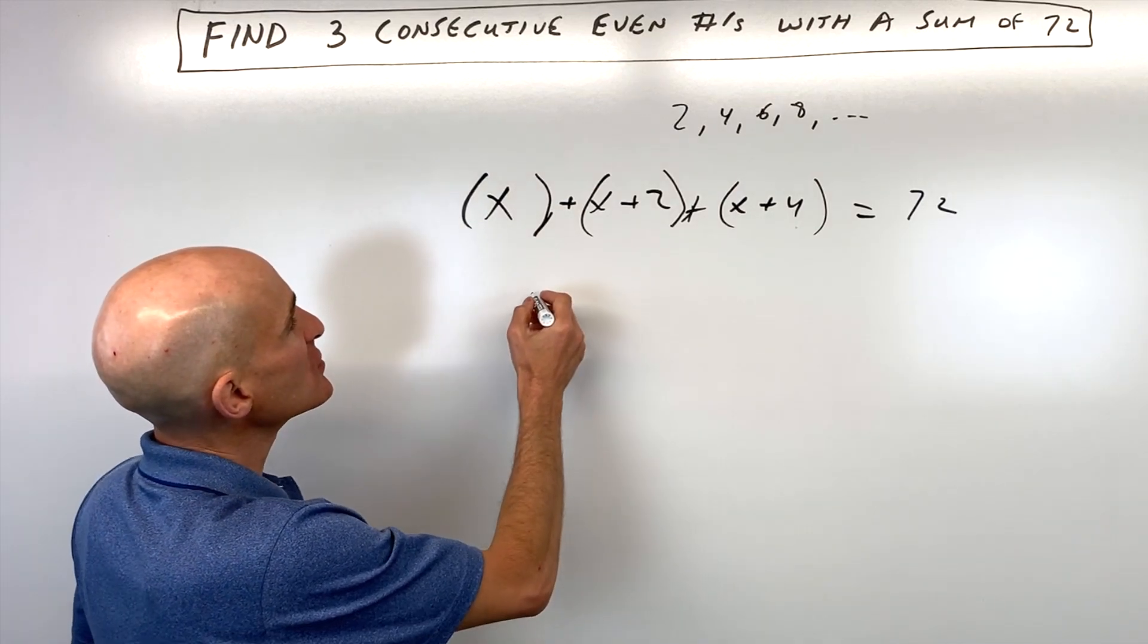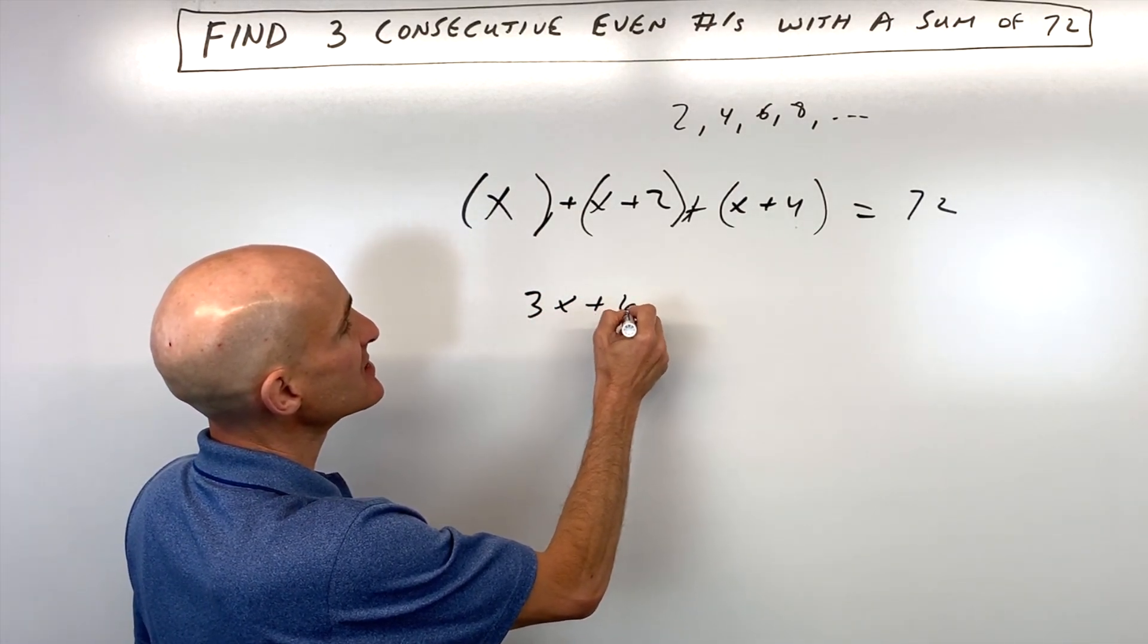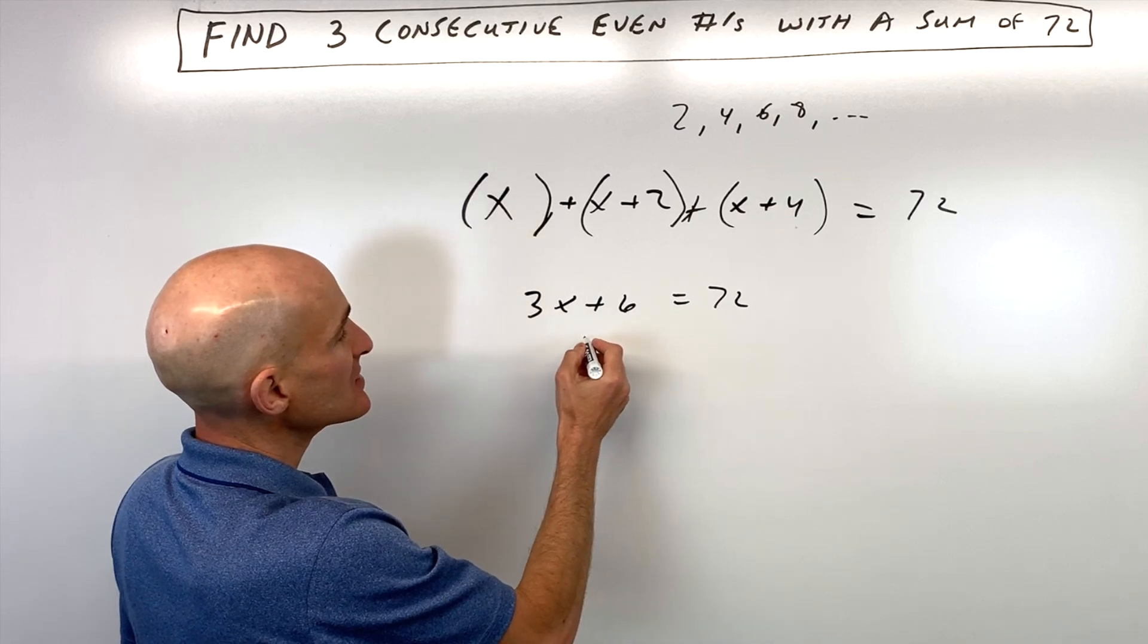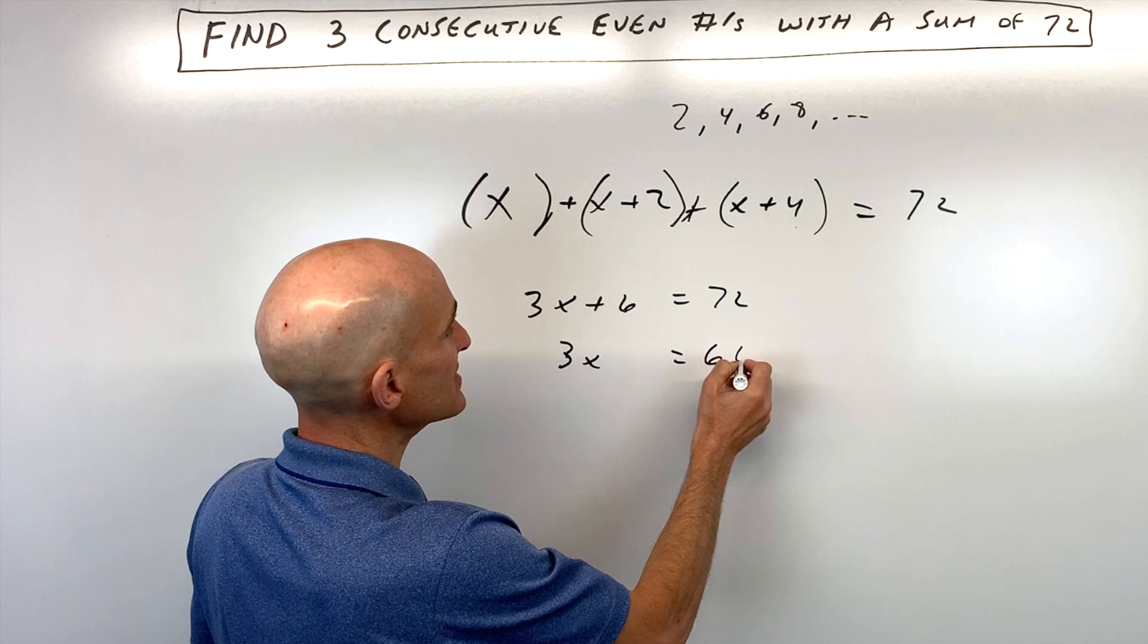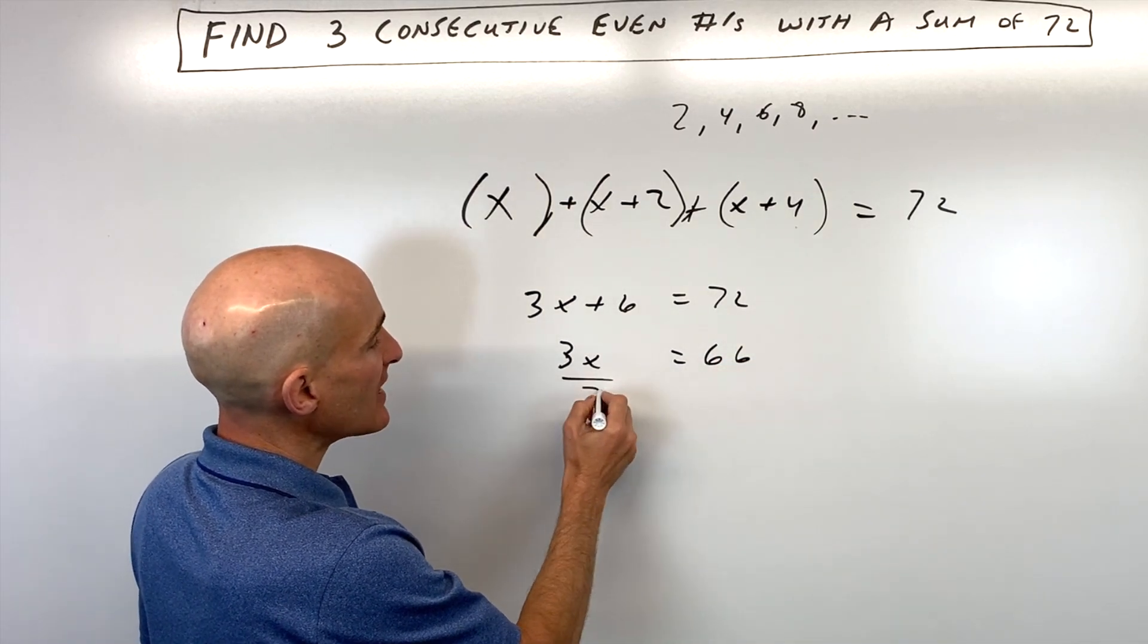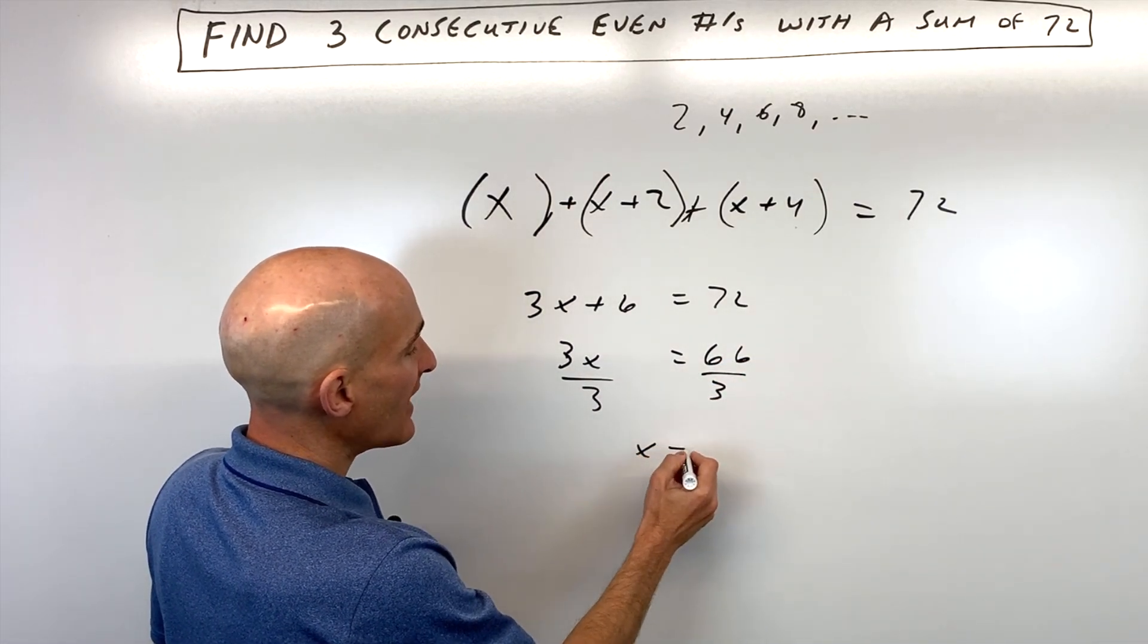So let's go ahead and combine like terms here. We have 3x plus 6 equals 72. Subtract 6 from both sides, and that gives us 66. And then if we divide both sides by 3, you can see that x equals 22.